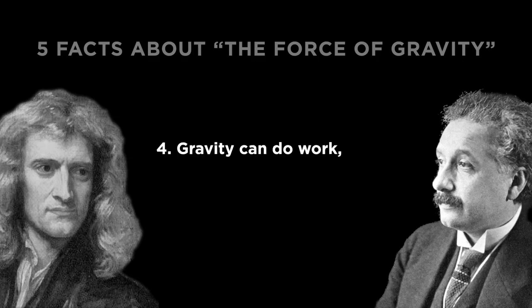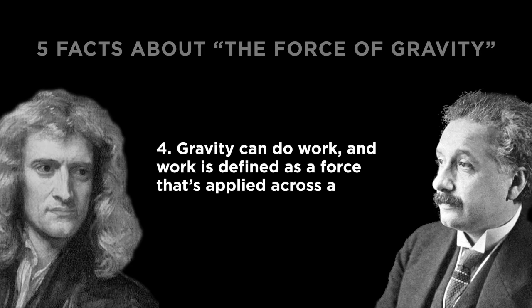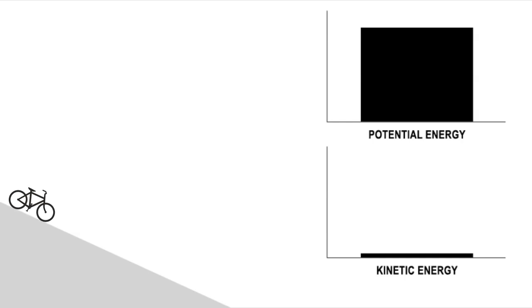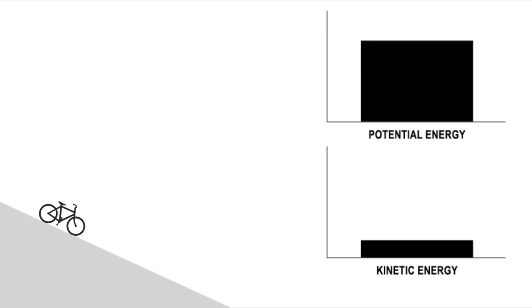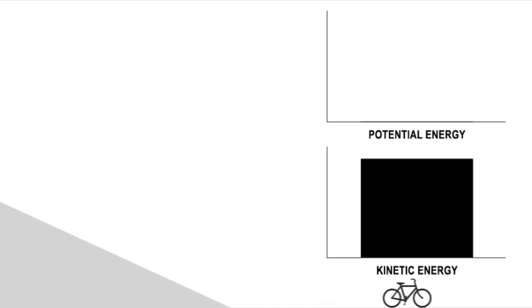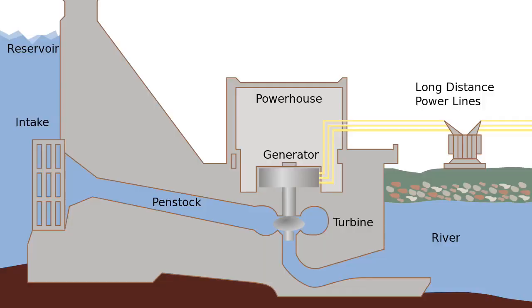Number four: gravity can do work, and work is defined as a force that's applied across a distance. In Newtonian terms, a bicycle on a hill has stored potential energy, which manifests as kinetic energy when gravity does work on the bike to bring it downhill. Stored potential energy actually isn't a thing in Einstein's theory. So if you're building a hydroelectric dam, it isn't going to help you. In that context, you can go ahead and consider gravity to be a force that does work, and you'll make useful calculations.